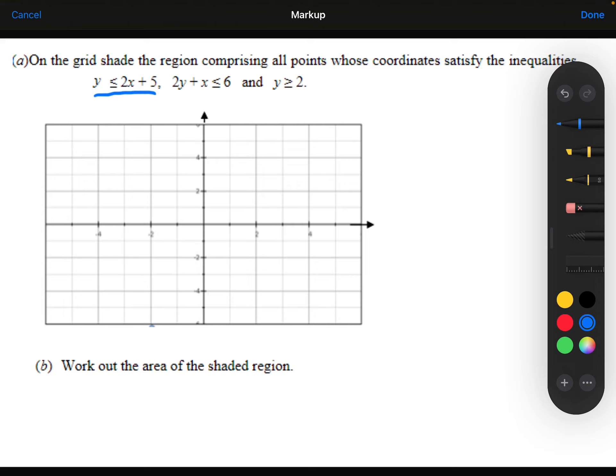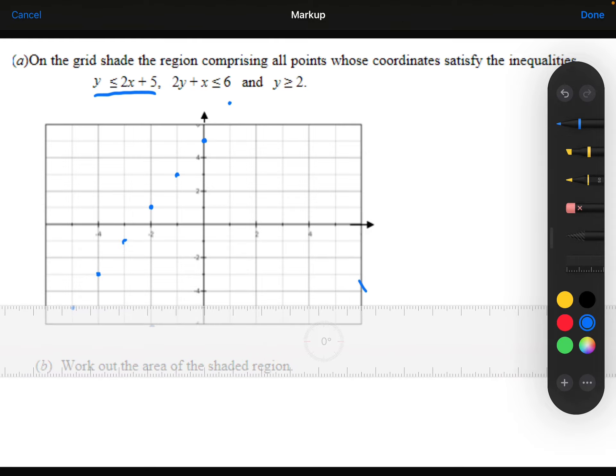So it's got a y-intercept of 5. It's got a gradient of 2, so along one up 2. And then going the other way. And drawing the line through those points.